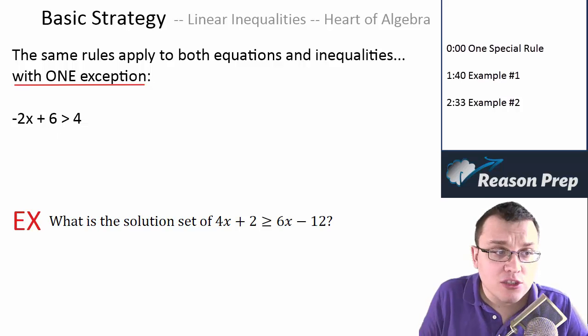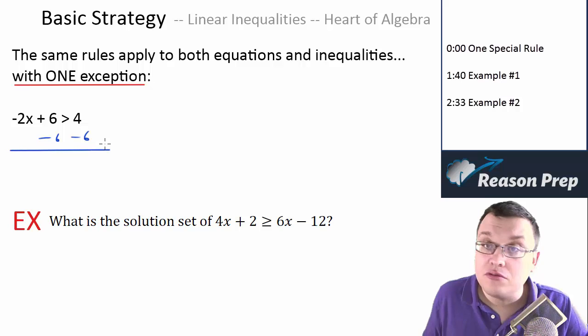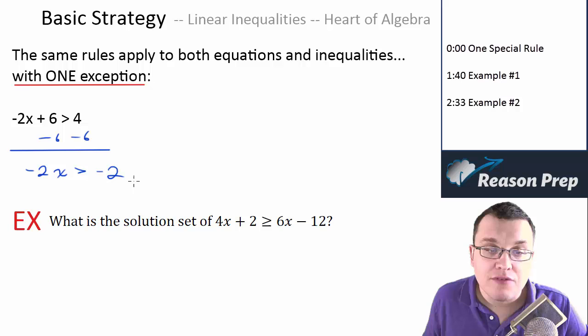Let's say we were solving this. We could, if we wanted to, just subtract 6 from both sides as we've done with an equation. We would get -2x is greater than -2. Now we would go ahead and divide both sides by negative 2, as we are allowed to do.